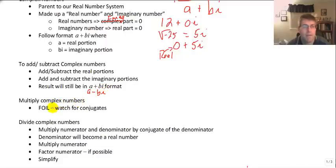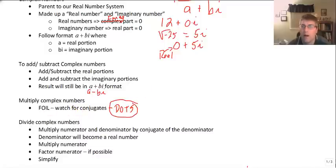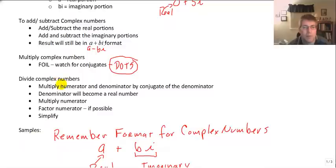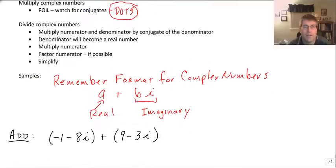We're also going to multiply complex numbers, and we do that by using FOIL — just make sure we distribute everything correctly through the process. FOIL is a mnemonic to help us do that. Watch out for conjugates, or watch out for those difference of two squares — that's going to come up quite a bit with complex numbers. And we're also going to divide complex numbers: we multiply the numerator and denominator by the conjugate of the denominator, so the denominator automatically becomes a real number, then we FOIL the numerator, factor if possible, and simplify.